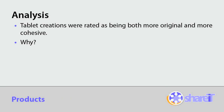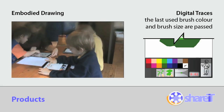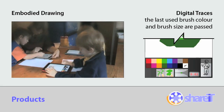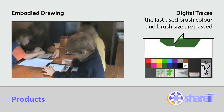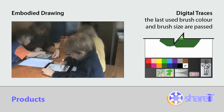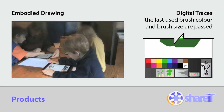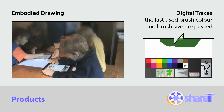We rated the creations for originality and cohesiveness, with tablet creations coming ahead in both categories. Why? First, drawing with fingers promoted embodiment — here, a six-year-old checks his fingers for paint. Second, the digital tool left traces of brush color and size that the next player could use.